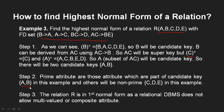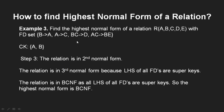Prime attributes are A and B; non-prime attributes are C and D. The relation is in first normal form as always. For second normal form: checking each FD, none of the left-hand sides (B, A, BC, AC) are proper subsets of a candidate key, so there is no partial dependency — the relation is in second normal form. For third normal form: in every FD the left-hand side is a key, so it satisfies third normal form. For BCNF, the only condition is that the left-hand side must be a key, and since every FD has a key on the left-hand side, the relation is in BCNF.